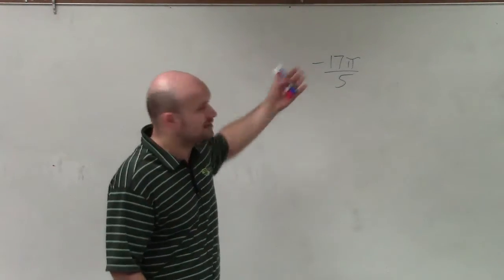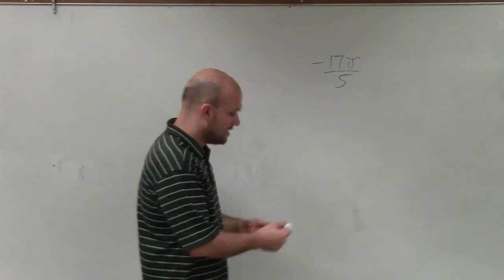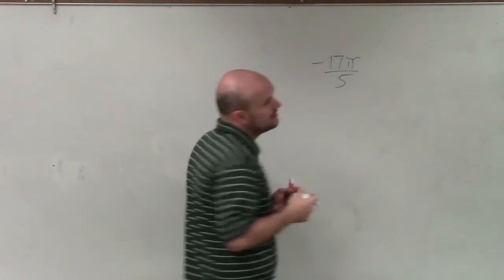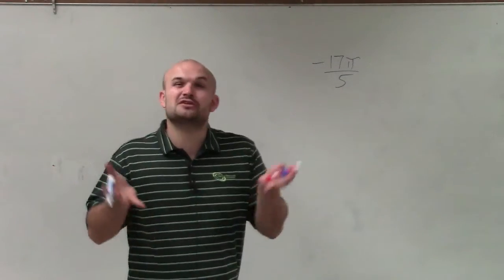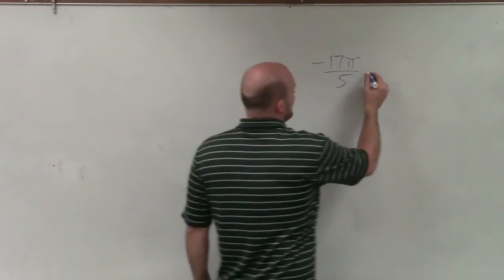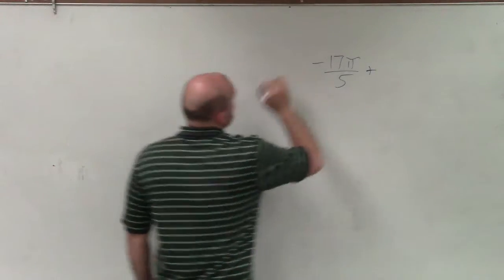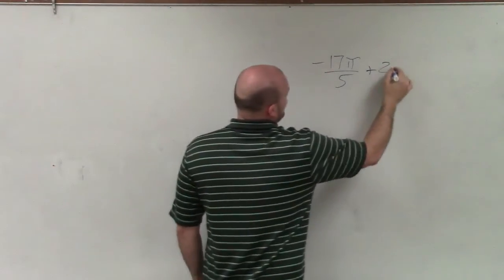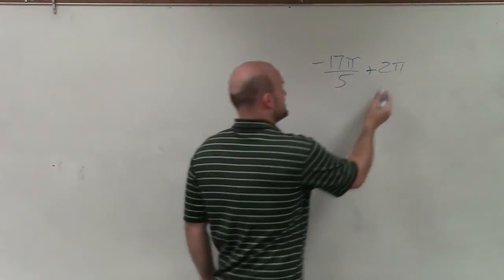So what I notice is there's a lot of revolutions in here. And what I want to do is I want to keep on adding 2 pi to this so I can get to the smallest negative. So if I add 2 pi once, now one thing important is, if I add 2 pi to this, I have to get common denominators.